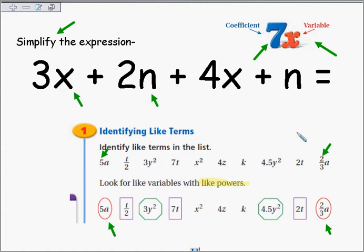Well, what if I had 3a squared, or to the second power? Would that be a like term? Could I circle that in red?